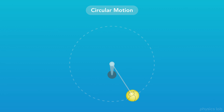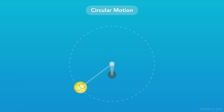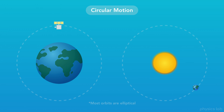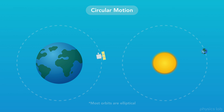Another example is a tetherball attached to a pole. As the ball swings around, it follows a circular path. There are thousands of satellites orbiting the Earth, and the Earth itself is orbiting the Sun. Technically, most orbits follow an ellipse, but we're mostly going to work with circular orbits.